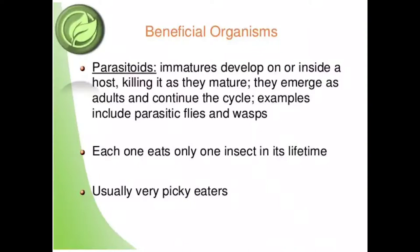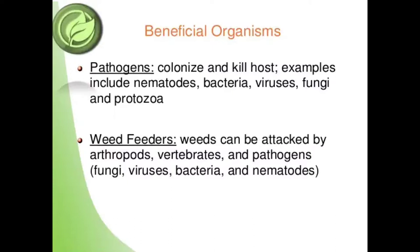The next group of beneficial organisms is parasitoids. Their immature stages develop on or inside a host, killing it as they mature, then emerge as adults and continue the cycle. Examples include parasitic flies and wasps; each eats only one insect in its lifetime and is usually a very picky eater. The next group is pathogens, which colonize and kill the host. Examples include nematodes, bacteria, viruses, fungi and protozoa. Weed feeders can be attacked by arthropods, vertebrates and pathogens including fungi, viruses, bacteria and nematodes.